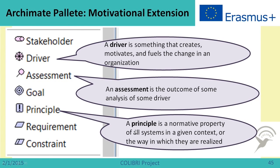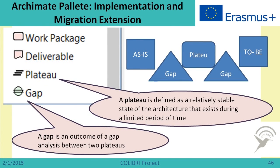The Archimate language also has an implementation and migration extension, which is meant for changing enterprise architecture. For example, when we want to move from the as-is state to the to-be state of enterprise architecture, we do it in several steps. A plateau then means a relatively stable state of enterprise architecture existing at a particular slice of time. The difference between one state of architecture and another is called a gap, which we obtain through analysis of enterprise architecture. This extension also includes work packages and deliverables.